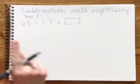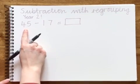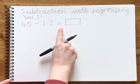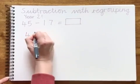So today we are going to be doing subtraction with regrouping. My first step is to read the number sentence which is 45 take away 17 equals we don't know. So first I'm going to put it into a column.